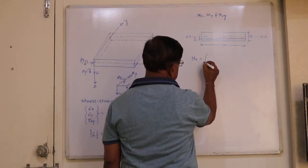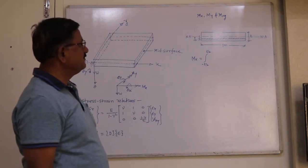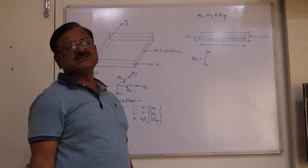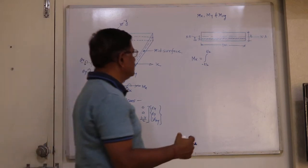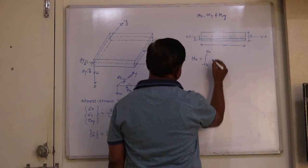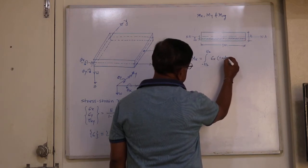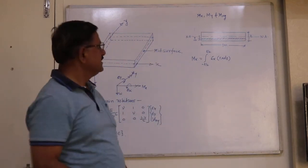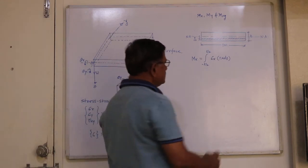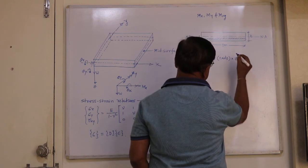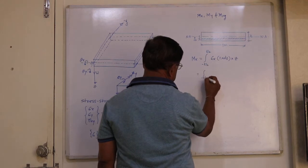The bending moment MX is given by integration from minus T/2 to T/2. The moment is force times distance. For the strip, the force is sigma X times area, where area is 1 times DZ. So the bending moment contribution of the strip is the stress sigma X acting on the strip multiplied by the area of the strip, multiplied by the distance Z. Integrating from minus T/2 to T/2 gives us the total bending moment MX.